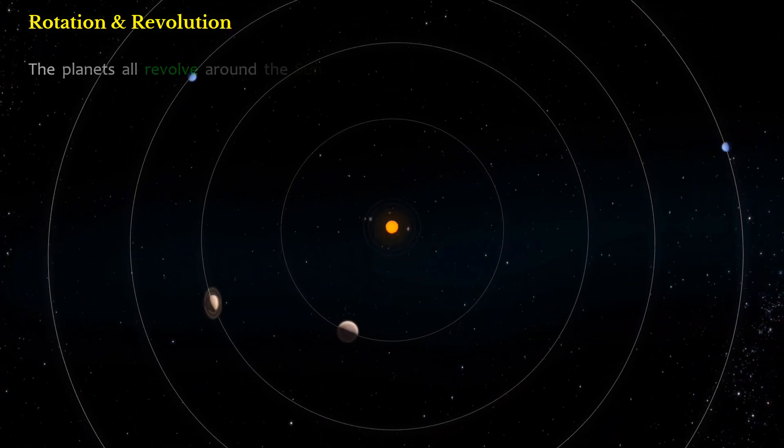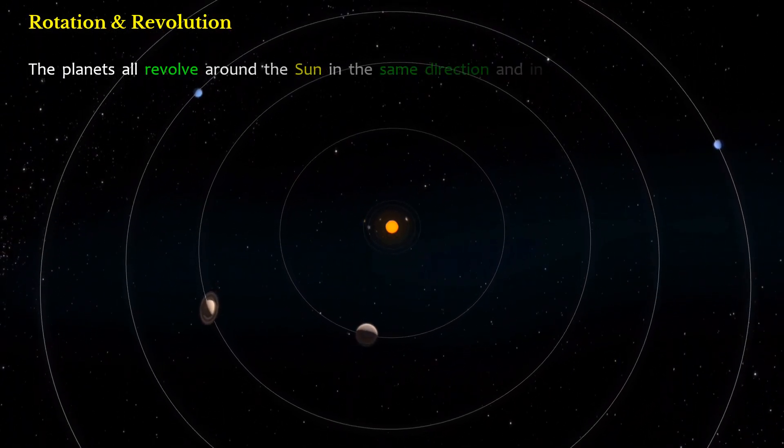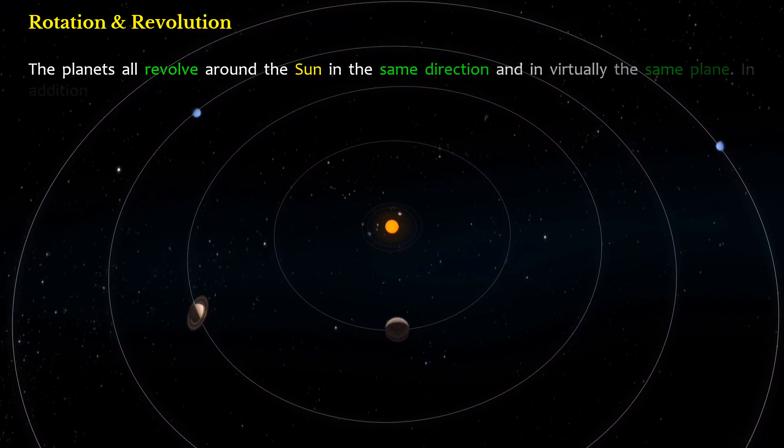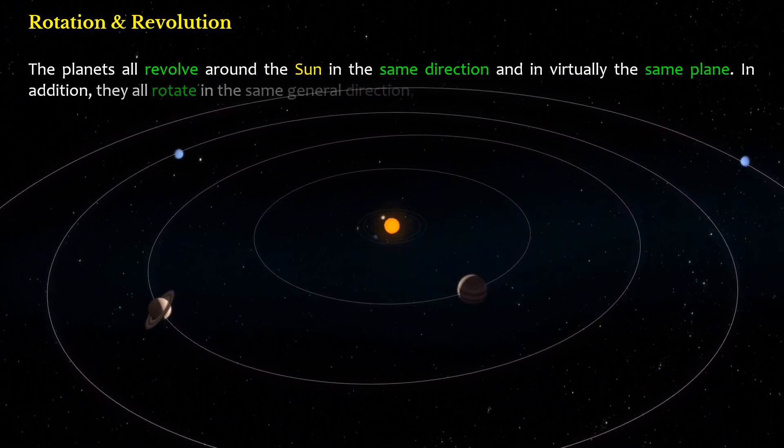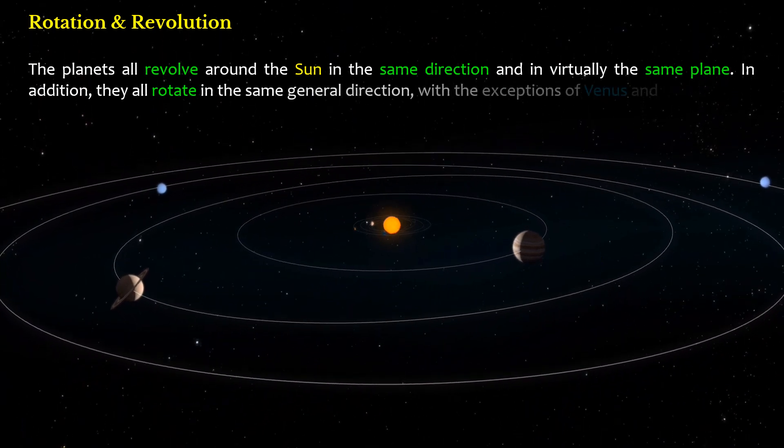The planets all revolve around the sun in the same direction and in virtually the same plane. In addition, they all rotate in the same general direction, with the exceptions of Venus and Uranus.